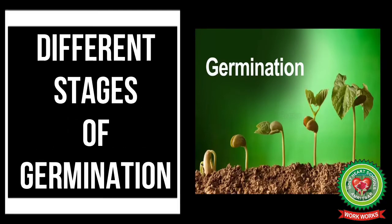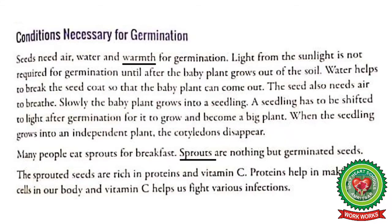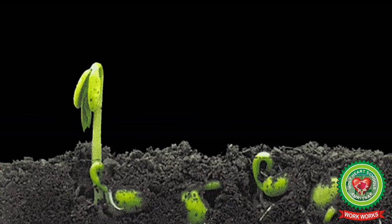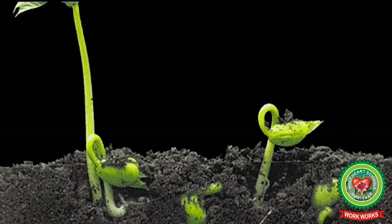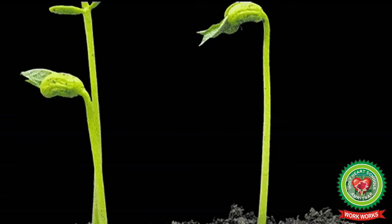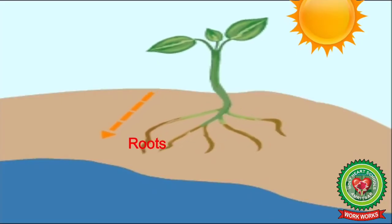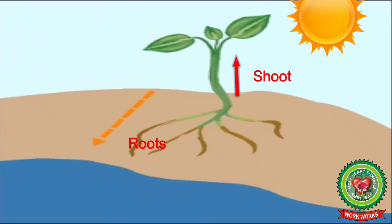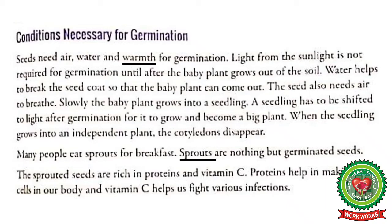The different stages of germination are: firstly, the seed is buried in the soil and gets warmth and water. The seed coat absorbs water and the cotyledon becomes soft and opens out so the baby plant can come out. The baby plant then develops roots that grow downwards.